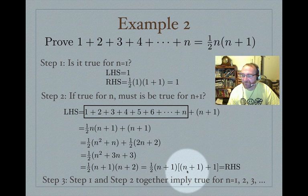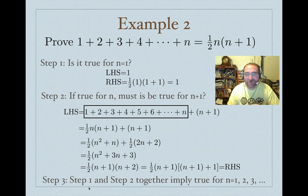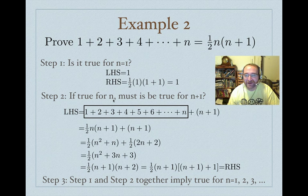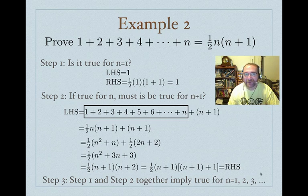And there it is — we get the right-hand side with n plus 1 replacing n. Steps one and two together mean it's true for two, three, four, five, six, seven — in fact for all n. By themselves the steps don't establish much, but link them together with step three and it works for all the counting numbers.